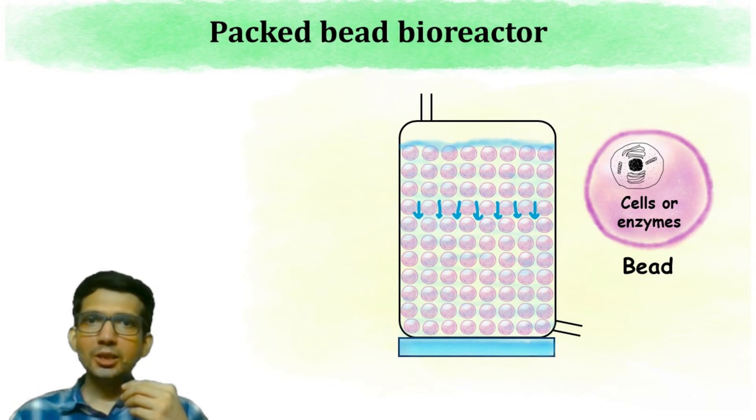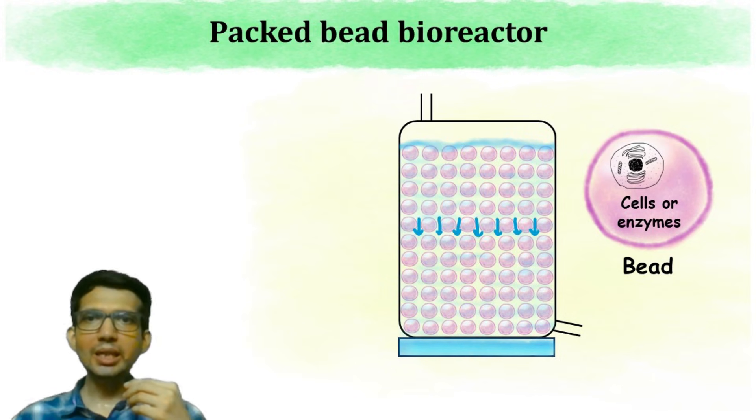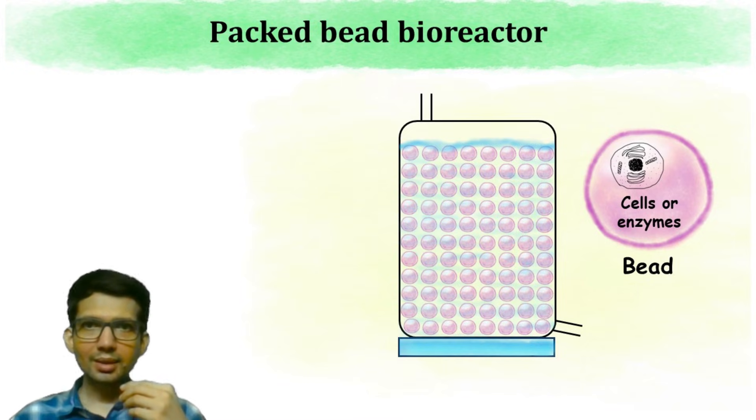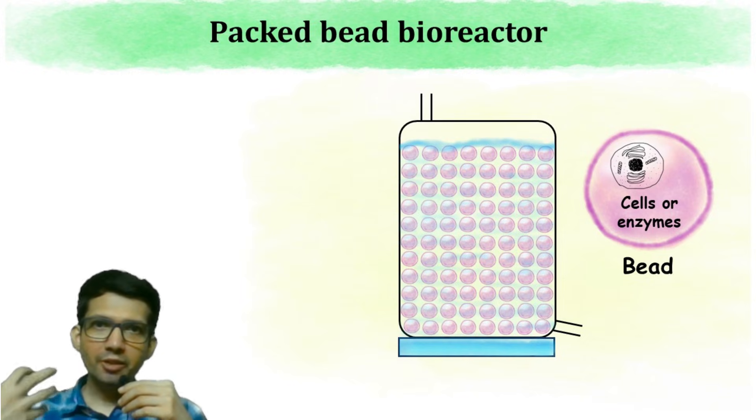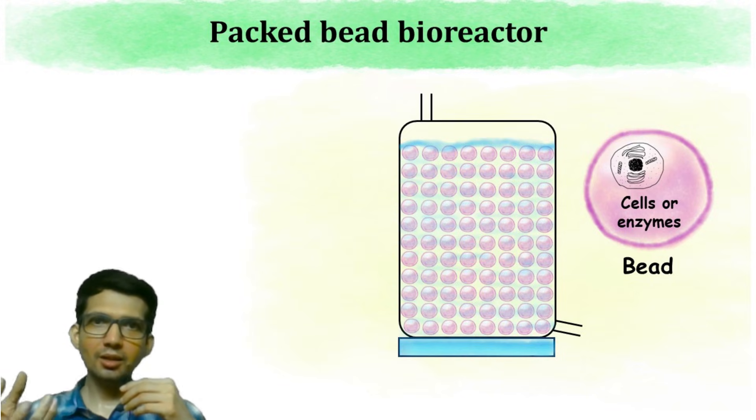When the solution is passed, the liquid moves around the surface of each bead. The liquid has the substrate which will diffuse inside the bead. The cells or enzyme in the bead will carry out the reaction and form the final product. This product diffuses out from the bead and gets collected in the liquid that is flowing. Finally, the liquid with our desired product is collected.